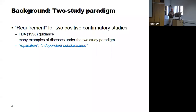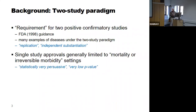There are situations where single study approvals are possible, but they are really limited to mortality or irreversible morbidity settings like oncology, very rare diseases, or pediatric indications — these are truly the exception to the rule. And even if you do a single study approval, you need statistically very persuasive and very low p-values.